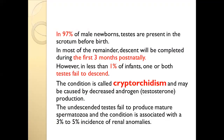Cryptorchidism is an abnormal condition. In 97% of male newborns, the testis descends in the first three months postnatally. About 1% have failure of descent — true cryptorchidism. Cryptorchidism impairs spermatogenesis. After delivery, male newborns should be examined for testis descent. If undescended testes are found, early surgical correction is required to prevent azoospermia or oligospermia and infertility in adulthood.